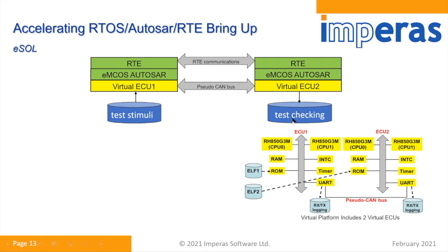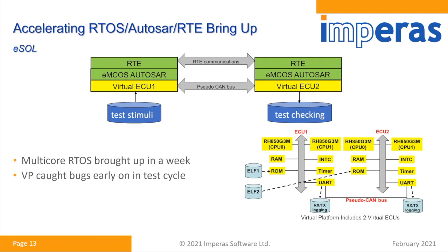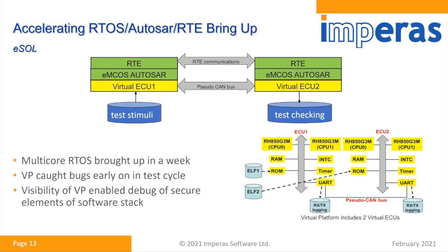Test stimuli was pumped into the first virtual ECU and test checking was done on the second one. The goal was to verify communications content to ensure high reliability. The multi-core AUTOSAR OS was brought up in a week. The virtual platform was also able to catch bugs early in the test cycle. Visibility of the virtual platform enabled debug of secure elements of the software stack. In the second phase of the project, the customer leveraged our tools to add code coverage and fault injection.